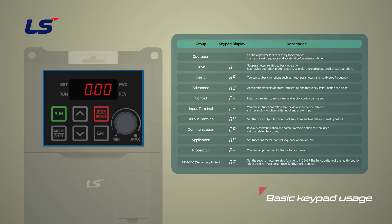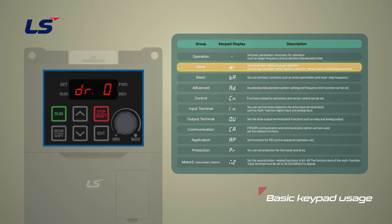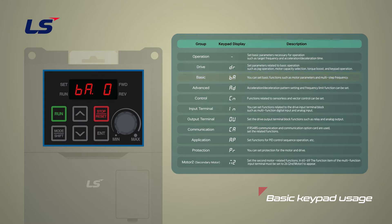When power is applied to the G100 and after pressing the Mode Shift key, the first parameter group is the Driving group. Pressing the Mode Shift key in order, you will see the Drive group that configures parameters for basic operation. These include jog operation, motor capacity evaluation, torque boost, and other keypad related parameters. The basic functional group that configures basic operation parameters.